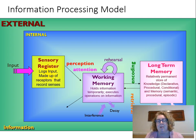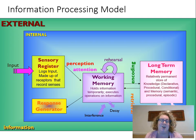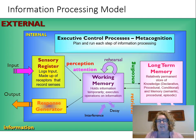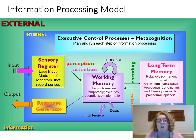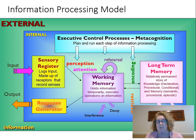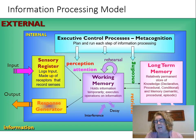If you can retrieve it, it goes from your working memory to a response generator, and you could say it or write it down on a sheet of paper — some output. All of these processes are managed by executive control processes — metacognition that plans and runs each step of information processing. When students have difficulty in learning, we often attribute it to executive control malfunctions, such as autism or ADHD — difficulties with executive control in the frontal lobes. The information processing model is really this computer model of the brain, thinking about how we input, store, and output information.